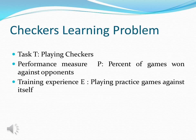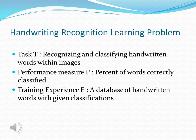Here is the first example for a well-defined learning problem: the checkers learning problem. Task T is playing checkers. Performance measure P is the percentage of games won against opponents. Training experience E is playing practice games against itself. The handwriting recognition learning problem is another well-posed learning problem. Task T is recognizing and classifying handwritten words within images. Performance measure P is the percentage of words correctly classified.